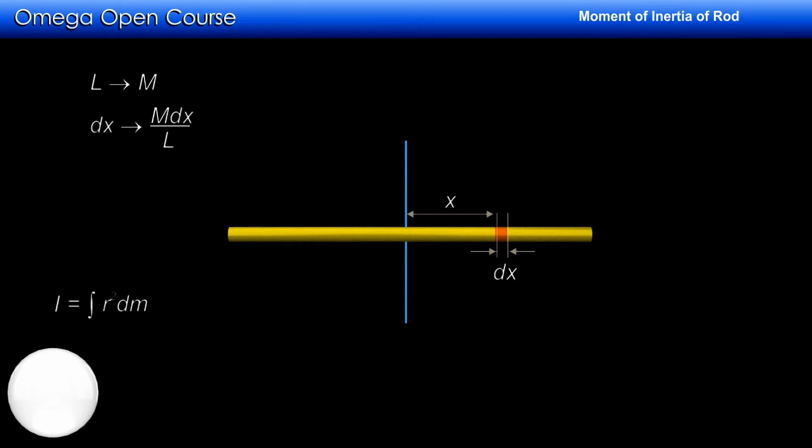Now, moment of inertia is given by integration of r square dm where dm is the mass of small part of the body and r is its distance from the axis. In our case, the mass of the particle is m by l into dx and distance of this particle from the axis is x.